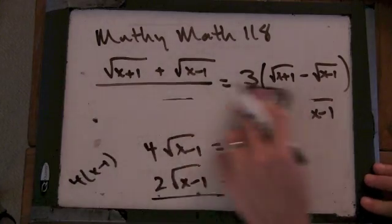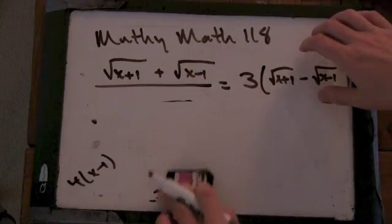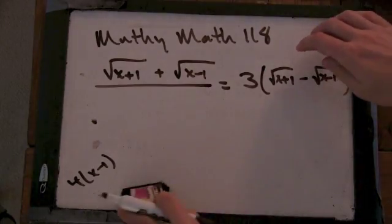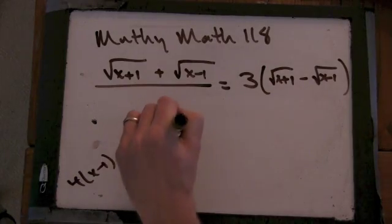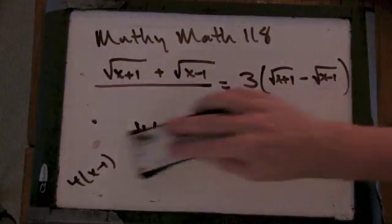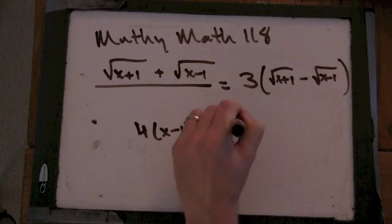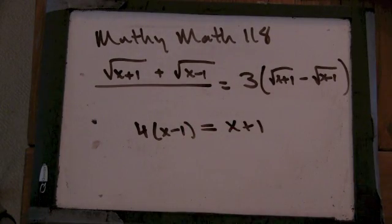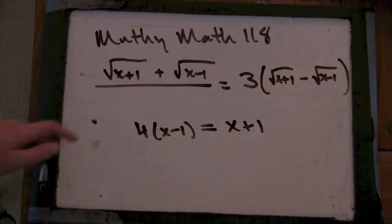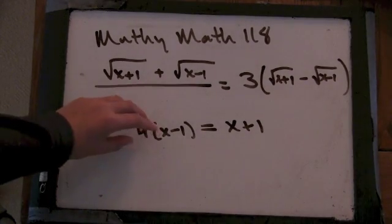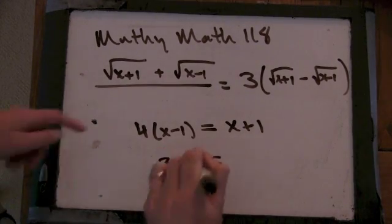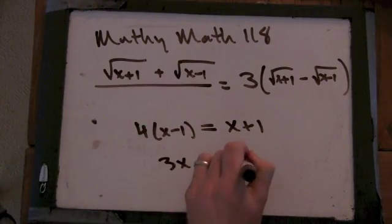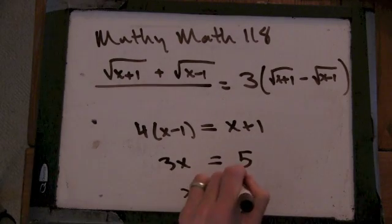So, 4 times x minus 1 equals x plus 1. I'm going to move this x so I get 3x on this side, equals 5. So x is 5 thirds.